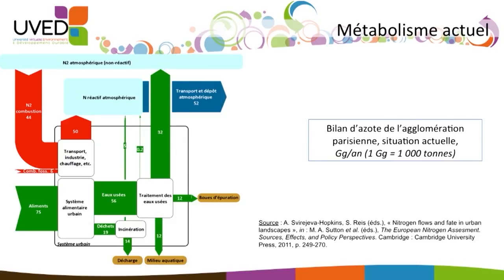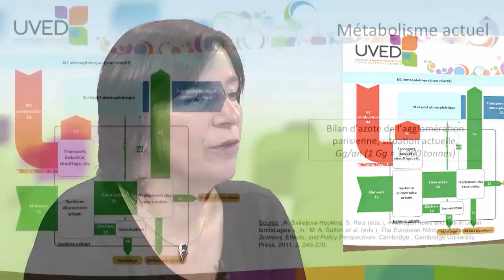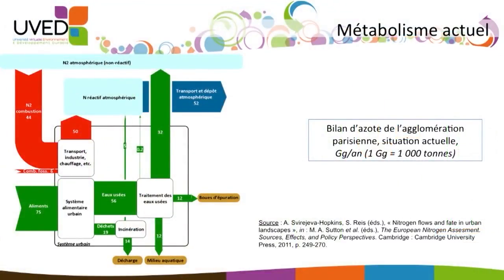This nitrogen balance is for the current period and it's expressed in gigagrams per year. What we see here is that urban nitrogen has two major origins: combustion in transportation, in the industry, in heating systems, and the food system for cities.